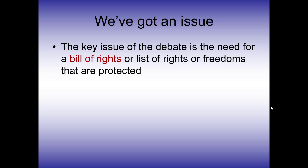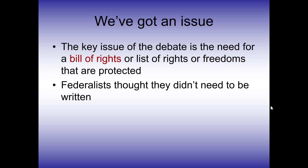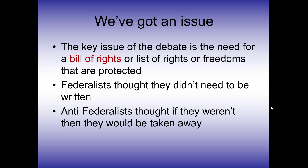A Bill of Rights is just a list of freedoms that are protected. We talk about these rights all the time — freedom of speech, freedom of press, freedom of religion. Federalists thought they didn't need a written Bill of Rights because these rights were inherent; everyone knew they had them and the Constitution would protect them anyway. However, Anti-Federalists were terrified that if these rights weren't written down as part of the document, they would get taken away. If they're not written down, then people in leadership later on could say you don't get those rights, and take them away.